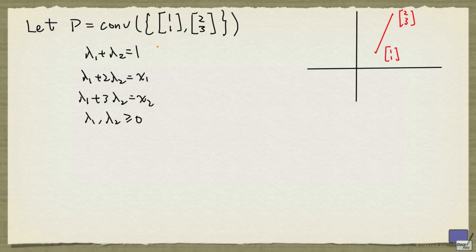So we need to eliminate λ_1 and λ_2 from this system. We could use the Fourier-Motzkin elimination method, but for this system, we can actually do something simpler.